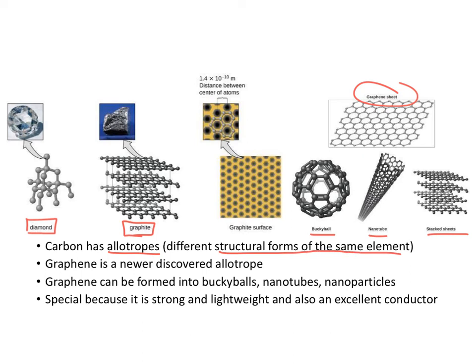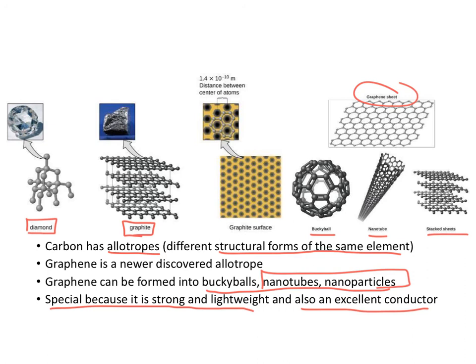Graphene in particular is one of the newer discoveries of carbon allotropes and can be formed into different shapes. Nanotubes and nanoparticles are being researched for use in medications and many different products. They are special because they're strong and lightweight, and they're also excellent conductors. Diamond and graphite are very common examples of allotropes — that's the key term to remember.